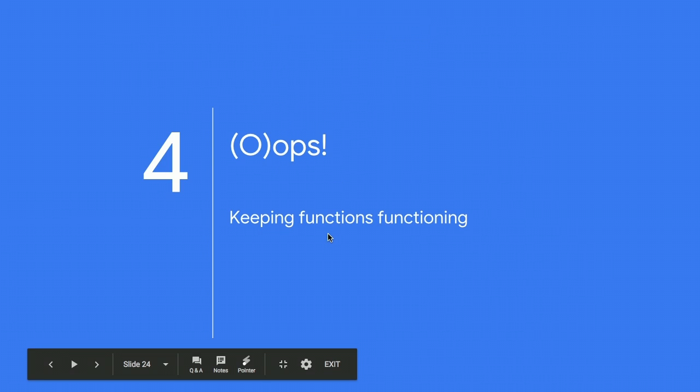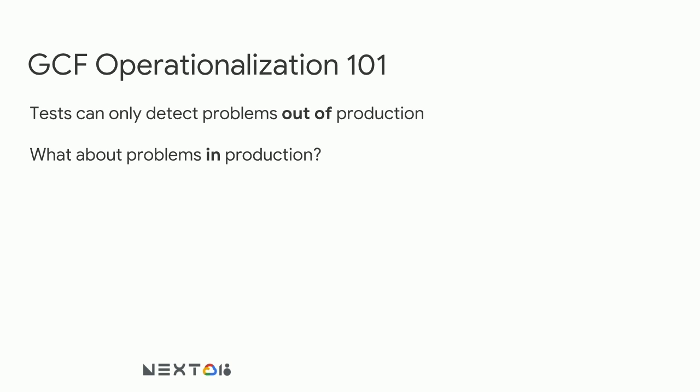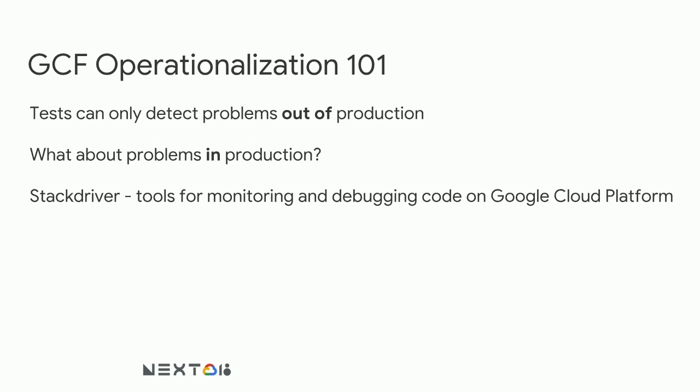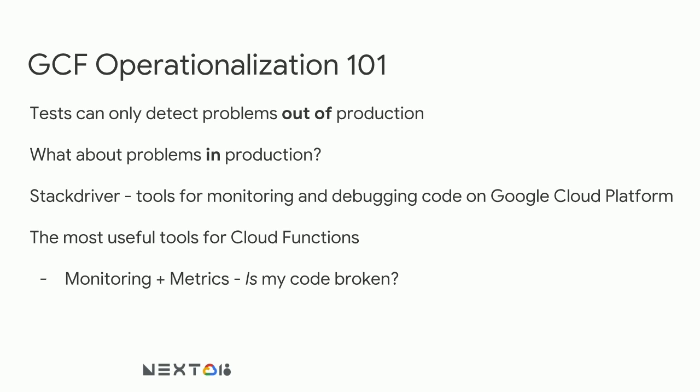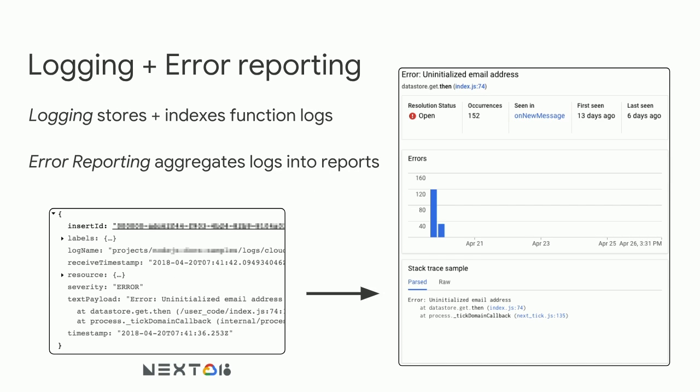Now that we've talked about automating the testing process, we can talk about what to do when something goes wrong and a bug ends up in production. GCF Ops 101: tests can only detect problems out of production. For problems in production, we need something different — and that something is Stackdriver. Stackdriver is a set of tools for monitoring and debugging code on GCP. The most useful tools for Cloud Functions are monitoring and metrics, which help figure out whether code is broken, and logging and error reporting, which help figure out where and why code is broken.